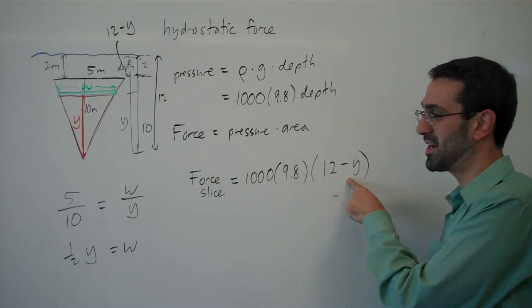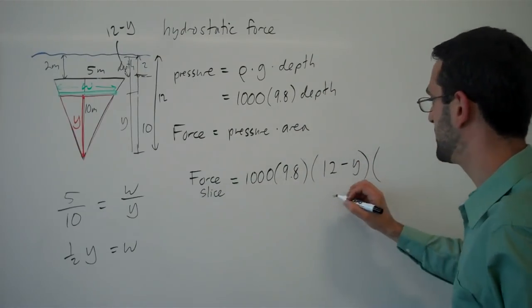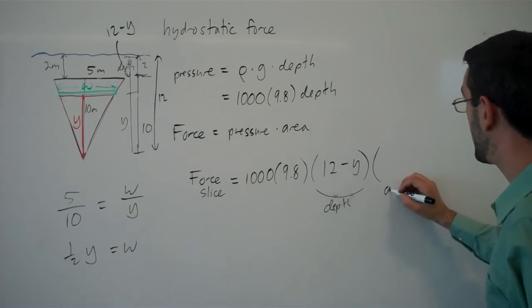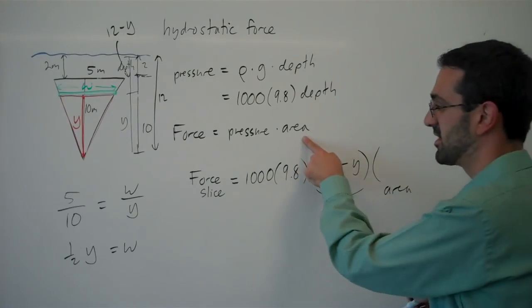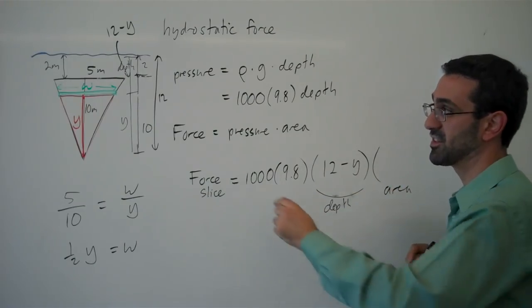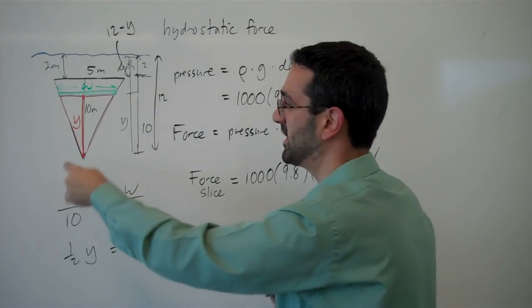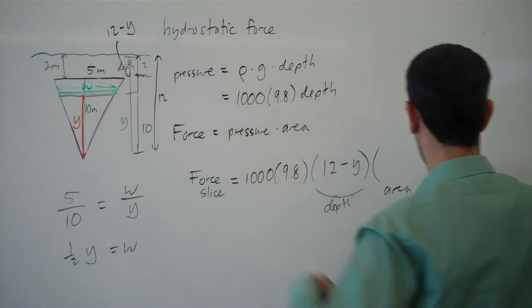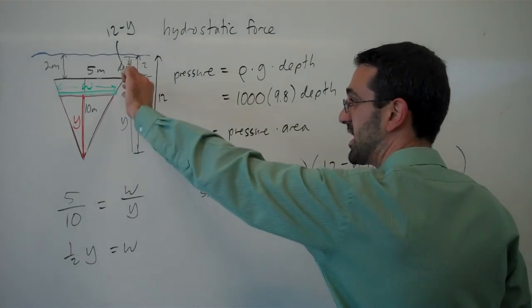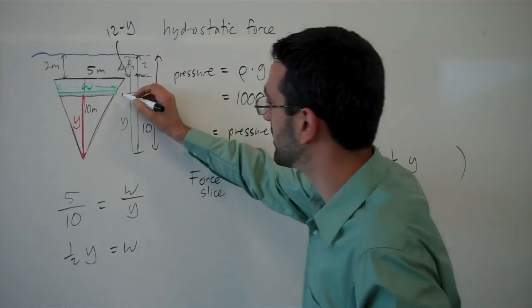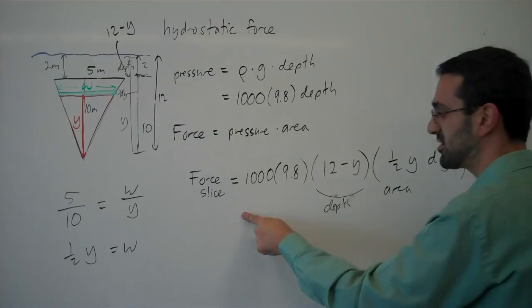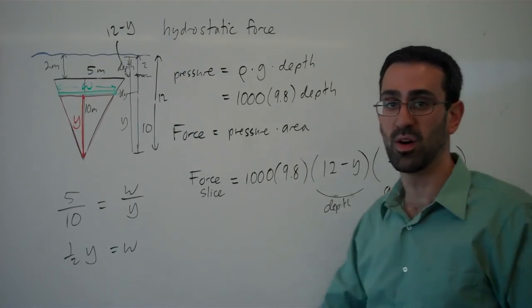So 12 minus y is the depth. Now we need the area of that slice. This was all pressure; now we multiply that by area. The area of this slice is a little rectangle, so we take the width, which is one-half y, times the height, which is some little change in y, dy. And there's the force on that one slice.